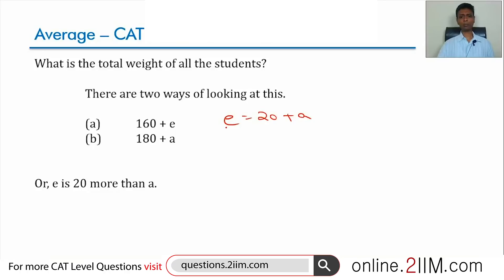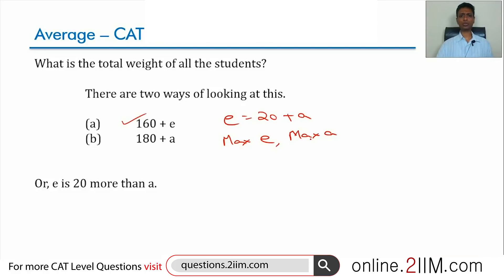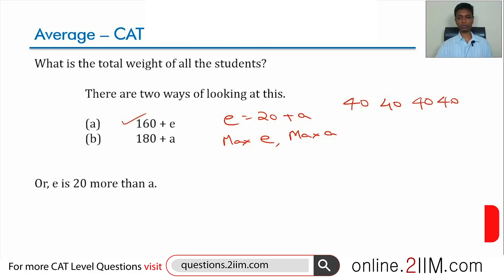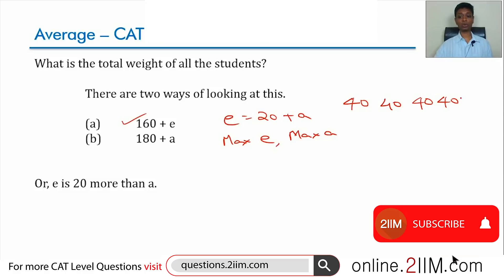The maximum possible average depends on the maximum value of e, which in turn depends on the maximum value of a. Since the average weight of the four lightest students is 40 and a is the lightest among them, the maximum value a can take is 40 — that would happen when a, b, c, d are all 40. Since e is 20 more than a, e would be 60.